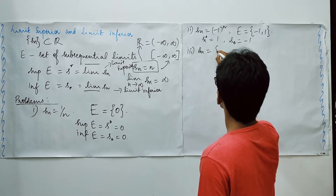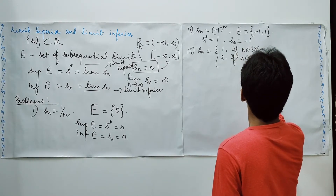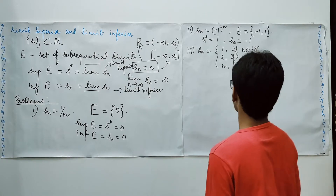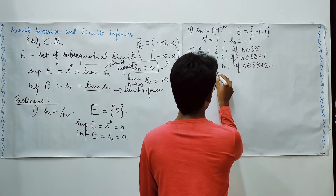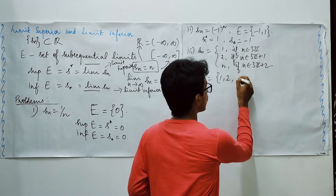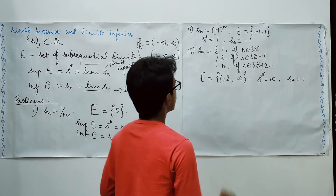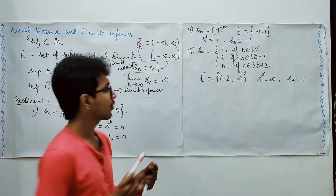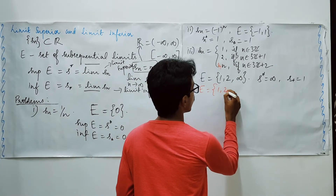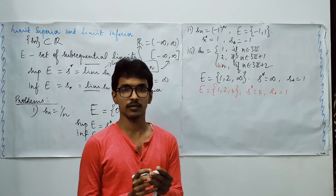If you consider another sequence, we have to look at the possible limits in the extended real line. The possibilities can be 1, 2, and infinity. So S upper star is infinity and S lower star is 1. Suppose in the place of n you have some finite value — let us take 4 — then E is going to be {1, 2, 4} and S upper star is 4 and S lower star is 1.